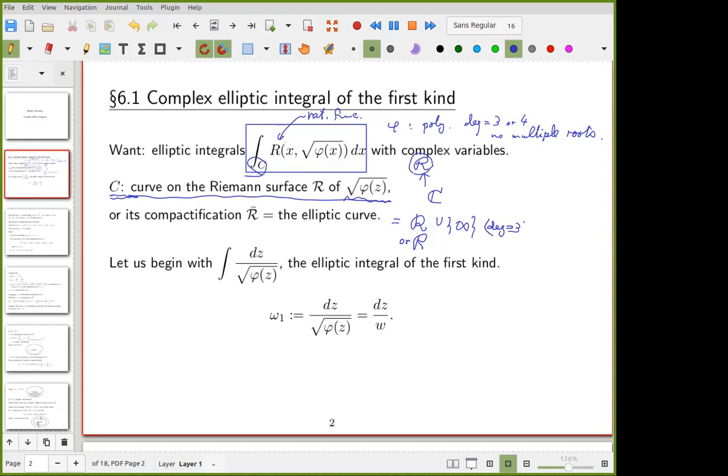When the degree of this polynomial is 3, we have to add one infinity. And in the case of degree 4 polynomial, we need two infinities. So that was what we discussed last time.